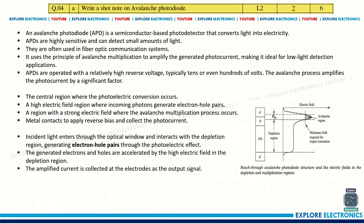Write a short note on avalanche photodiode. An avalanche photodiode is a semiconductor-based photodetector that converts light to electrical energy. The diagram shows the avalanche region clearly — you need to show where the avalanche region occurs and the minimum field required for impact ionization — and the related explanation of how it works is provided.